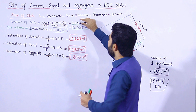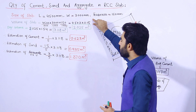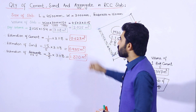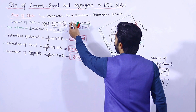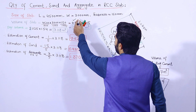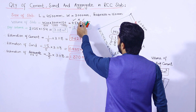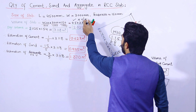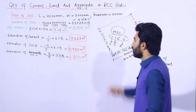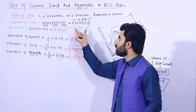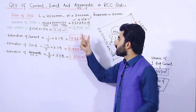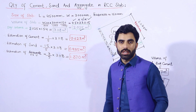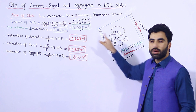Now let me find the volume of the slab. The volume is calculated as 4.5 × 3 × 0.15, since we have already converted the dimensions to meters. This gives us the required volume of concrete in the slab, which is 2.025 cubic meters.